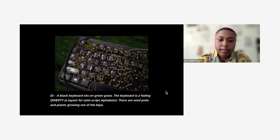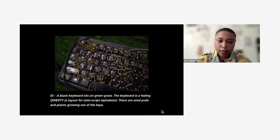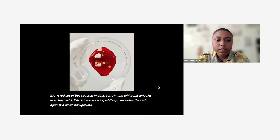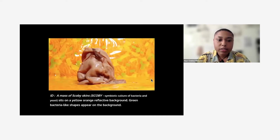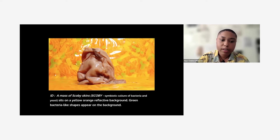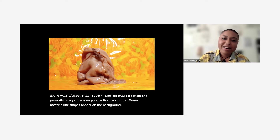This first image: a black keyboard sits on green grass. The keyboard is a fading QWERTY layout for Latin script alphabets. There are seed pods and plants growing out of the keys. In this next image, a set of red lips covered in pink, yellow, and white bacteria sits in a clear petri dish. A hand wearing white gloves closes the dish against a white background. In this next image, a mass of SCOBY — symbiotic culture of bacteria and yeast — sits on a yellow-orange reflective background with bacteria-like shapes appearing in the background.